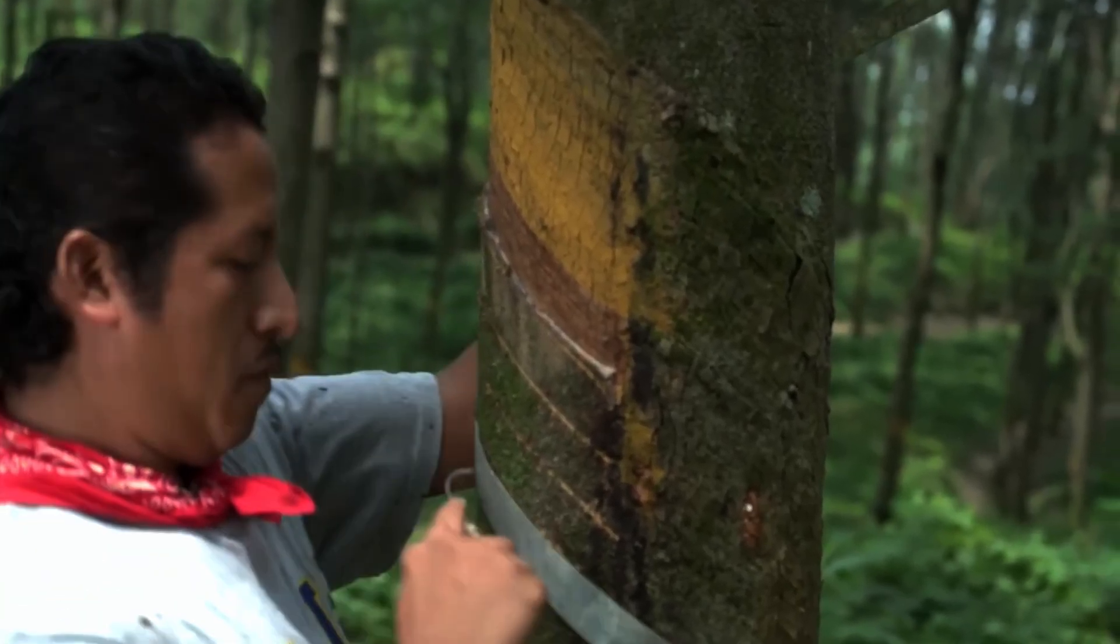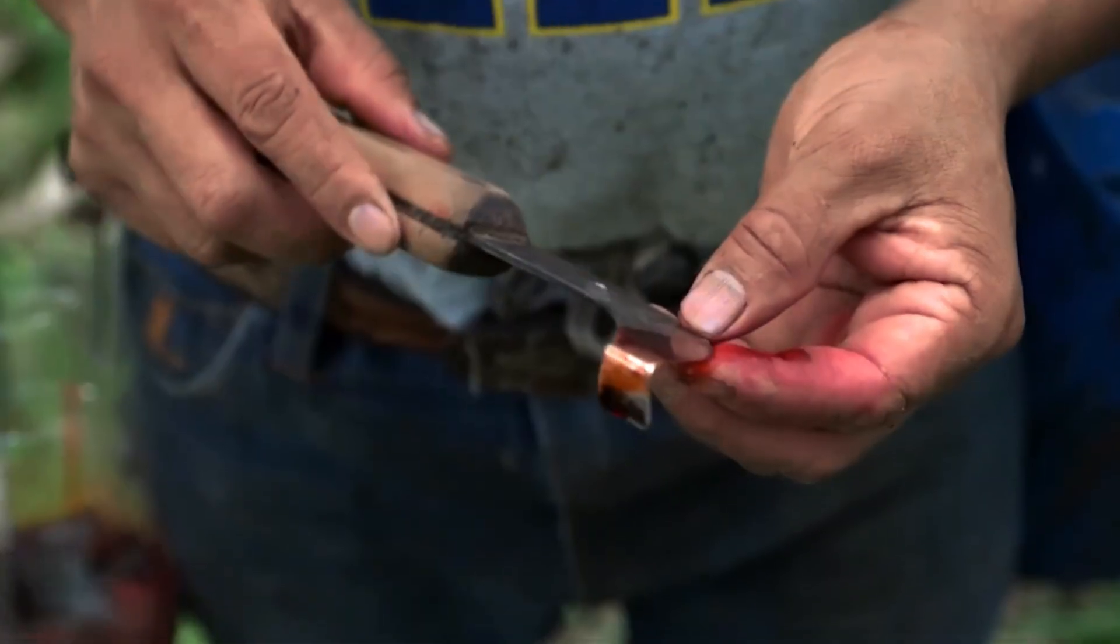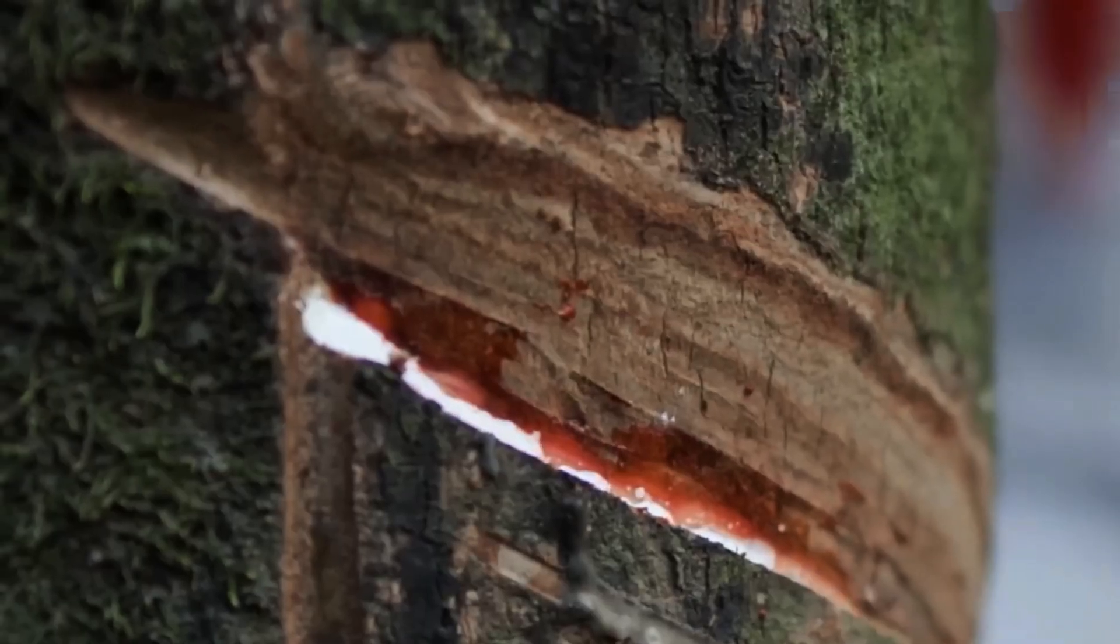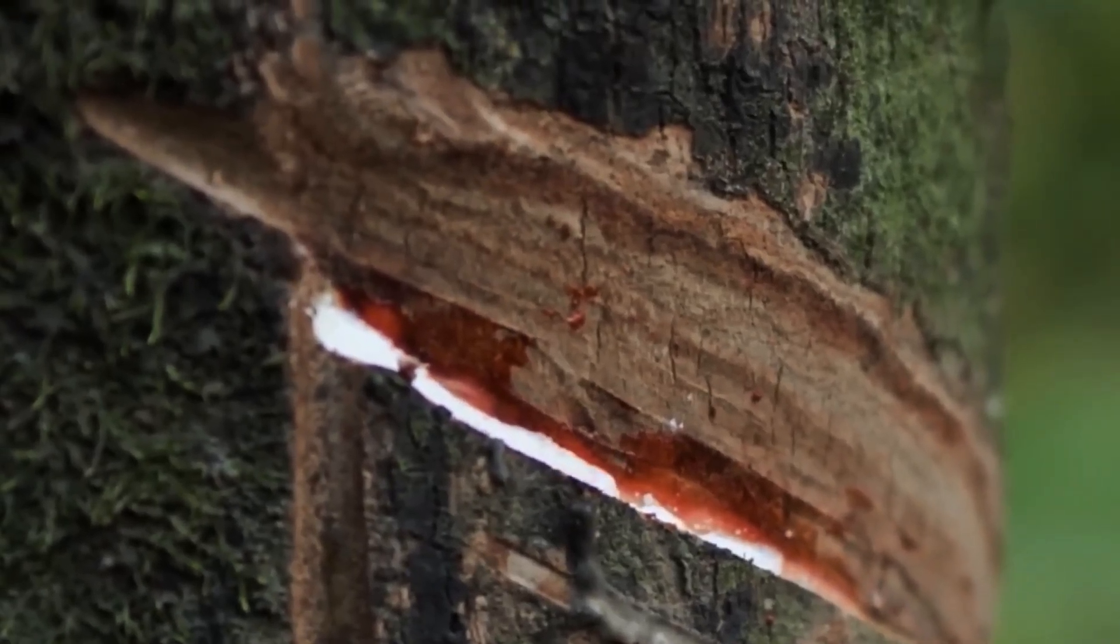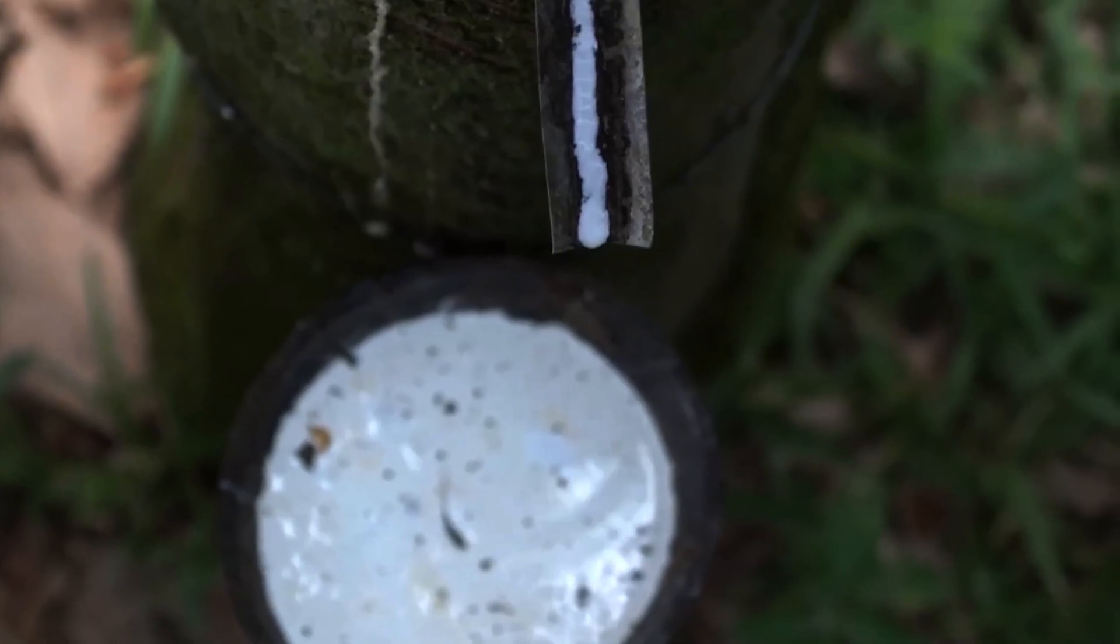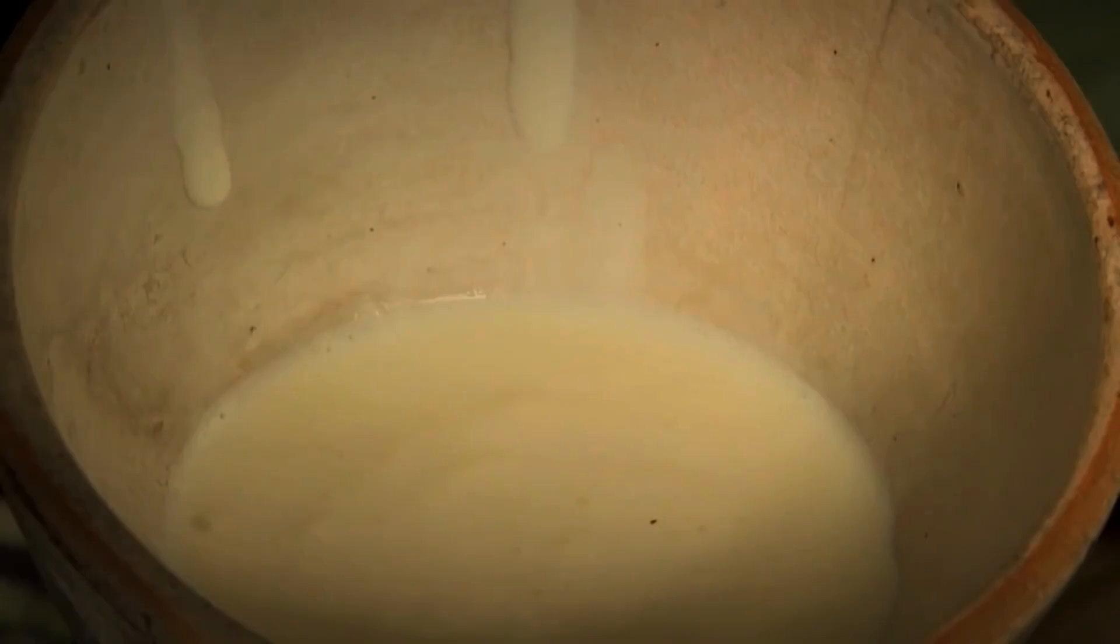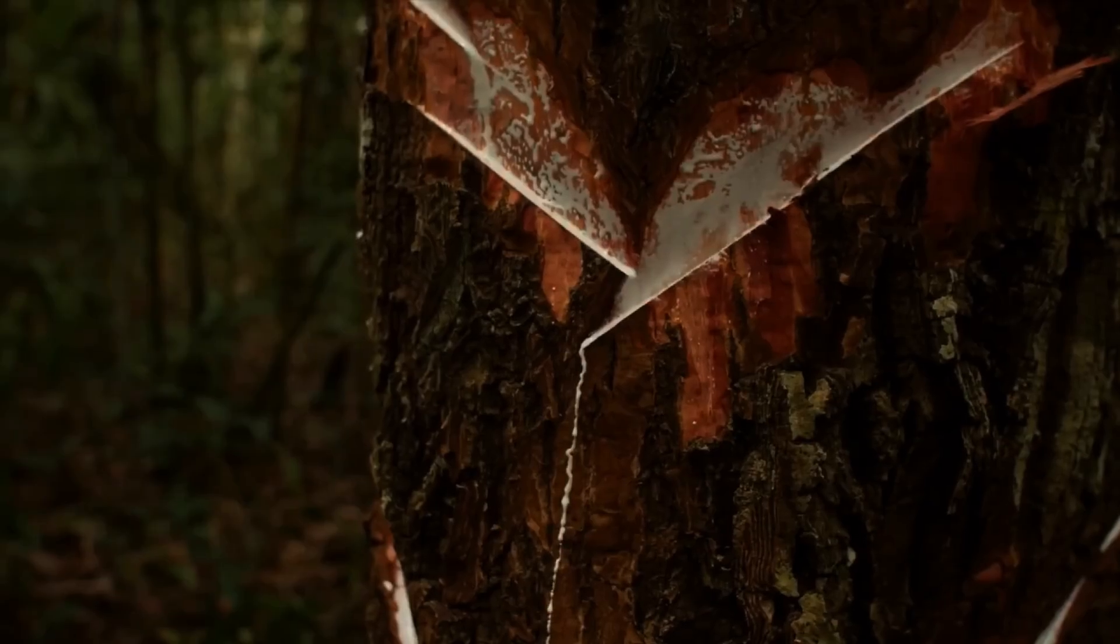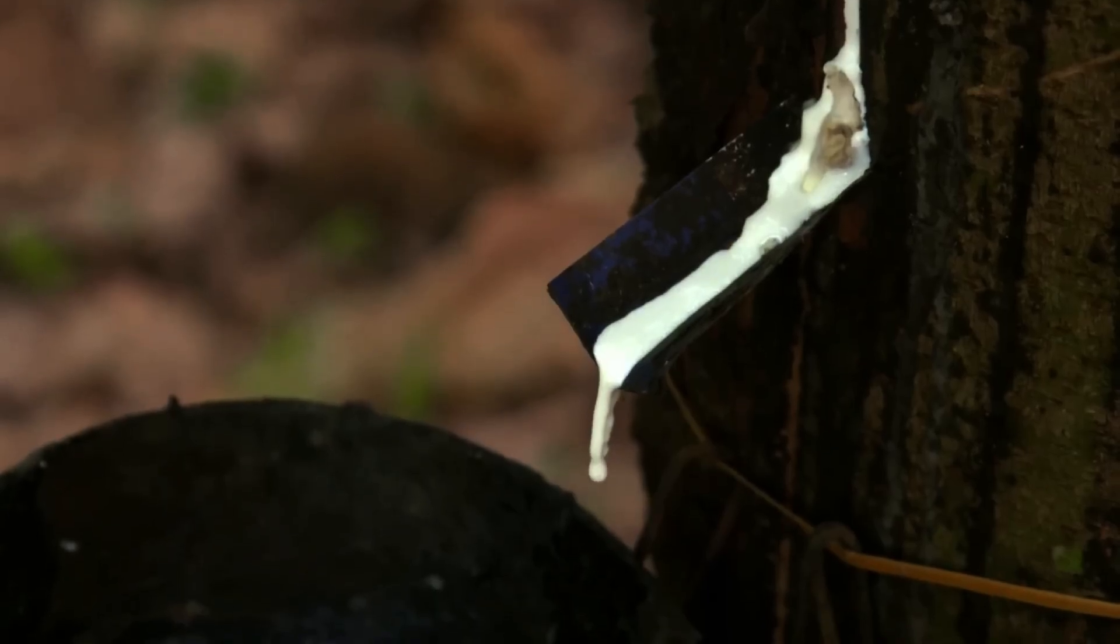The liquid begins to slowly drip and is collected in small bowls placed at the base of the trunk. This process requires not only skill but also patience. If the cut is too deep or at the wrong angle, it can damage the tree and reduce its future production. That's why each incision is made with respect for the tree, following techniques perfected over generations.